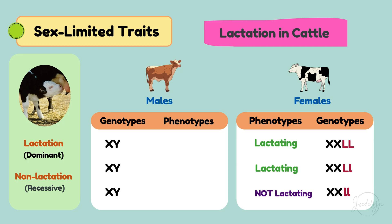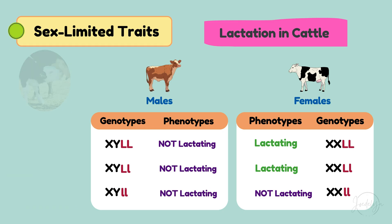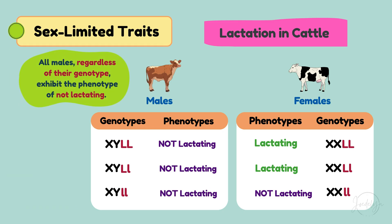On the other hand, in males: both dominant LL equals not lactating; one dominant L and one recessive l equals not lactating; both recessive ll equals not lactating. All males, regardless of their genotype, exhibit the phenotype of not lactating.